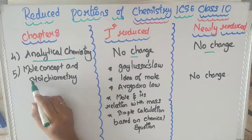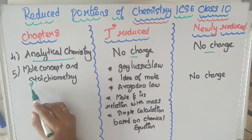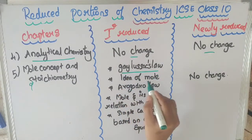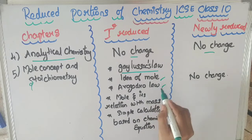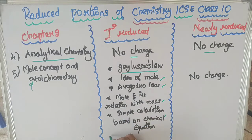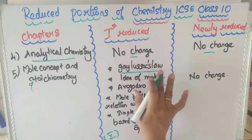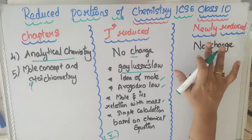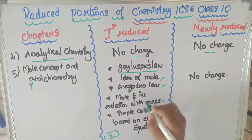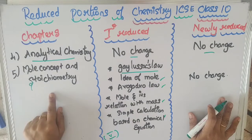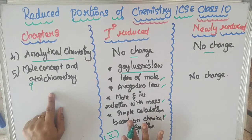In the fifth chapter, Mole Concept and Stoichiometry, during the first reduction five topics were removed: Gay-Lussac's Law, idea of mole, Avogadro's Law, mole and its relation with mass, and simple calculations based on chemical equations. There is no further change in the new reduction.